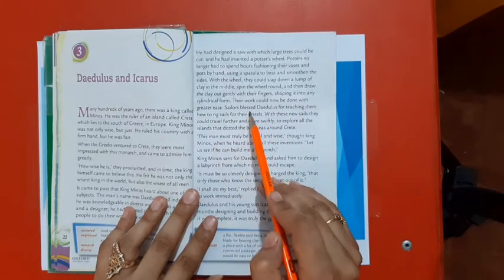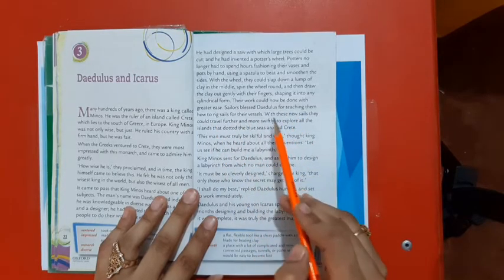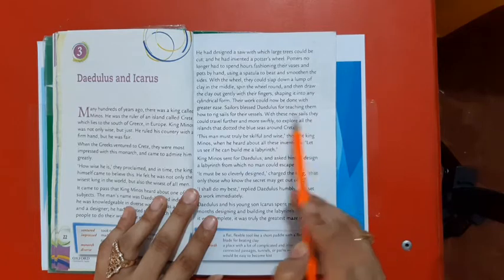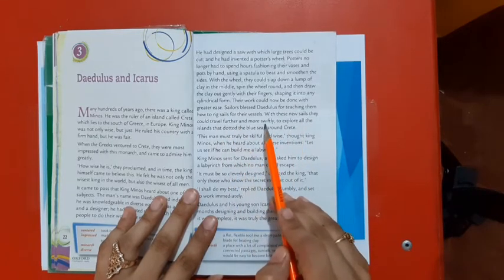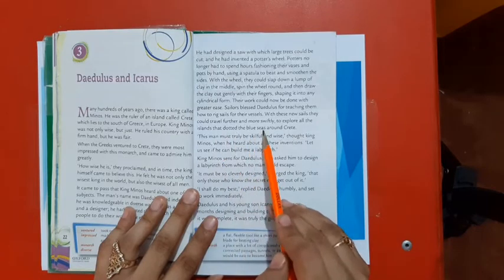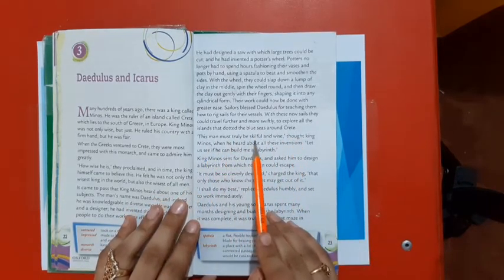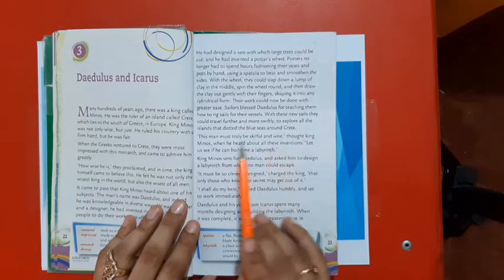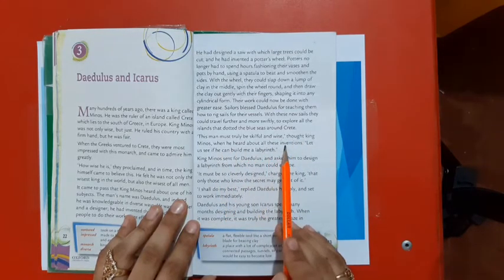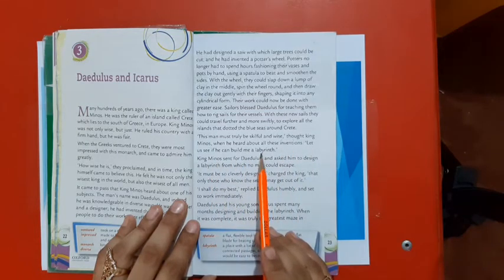Sailors blessed Daedalus for teaching them how to rig sails for their vessels. With these new sails, they could travel further and more swiftly to explore all the islands that dotted the blue seas around Crete. This man must truly be skillful and wise, thought King Minos when he heard about all these inventions.